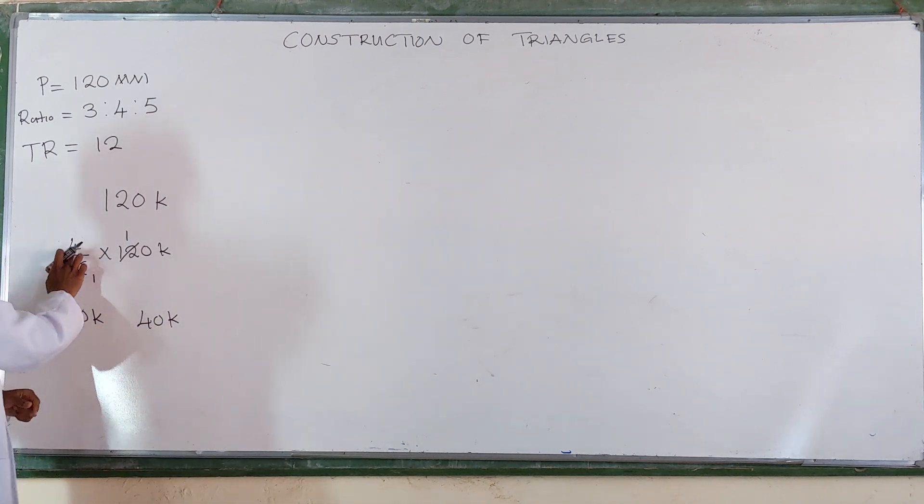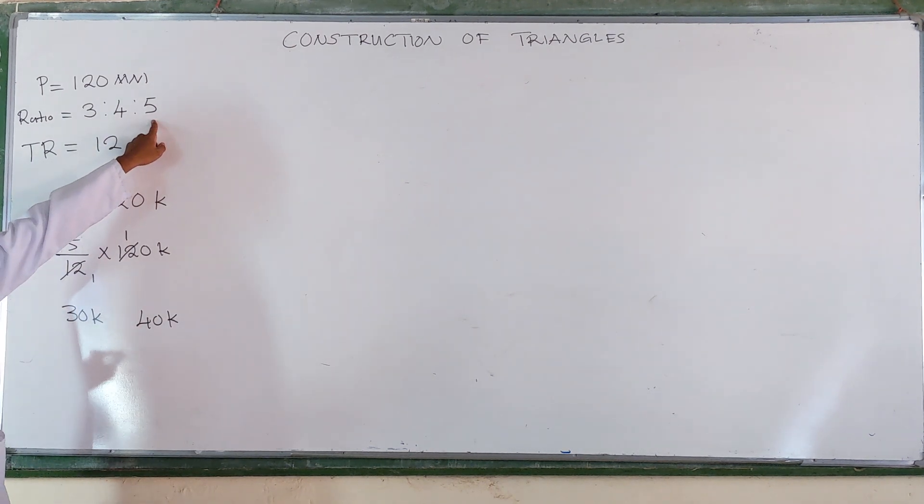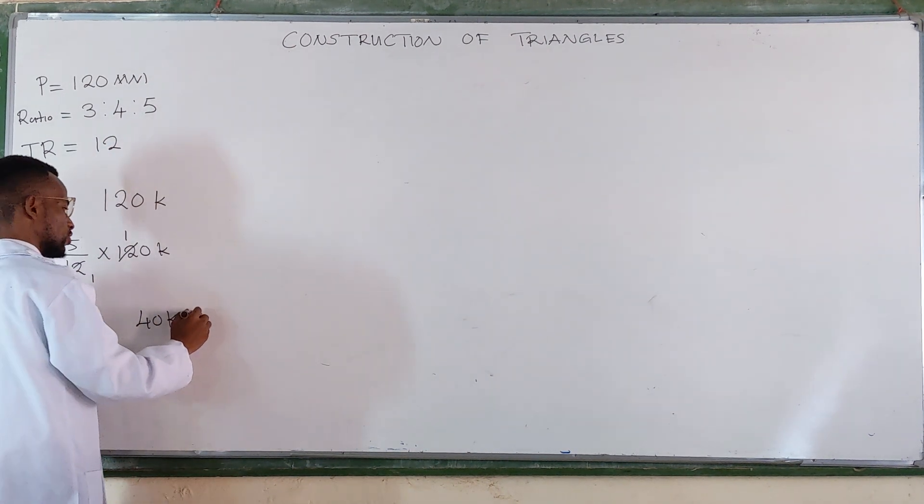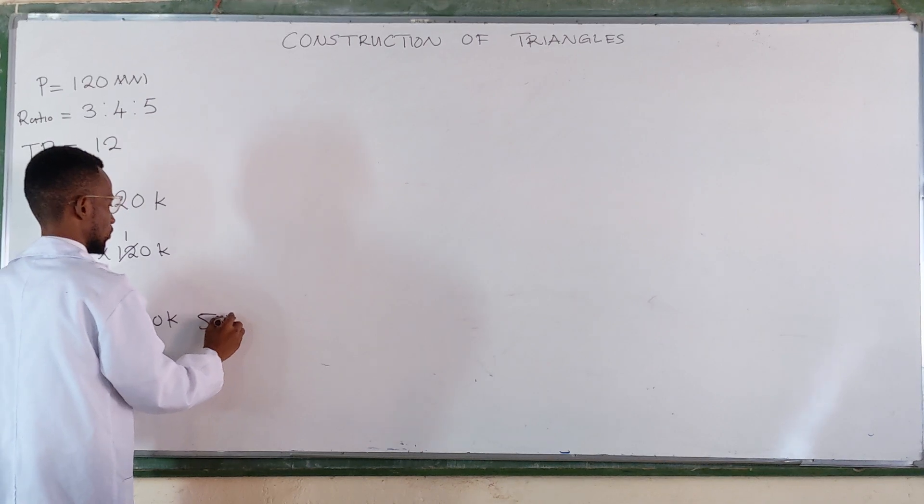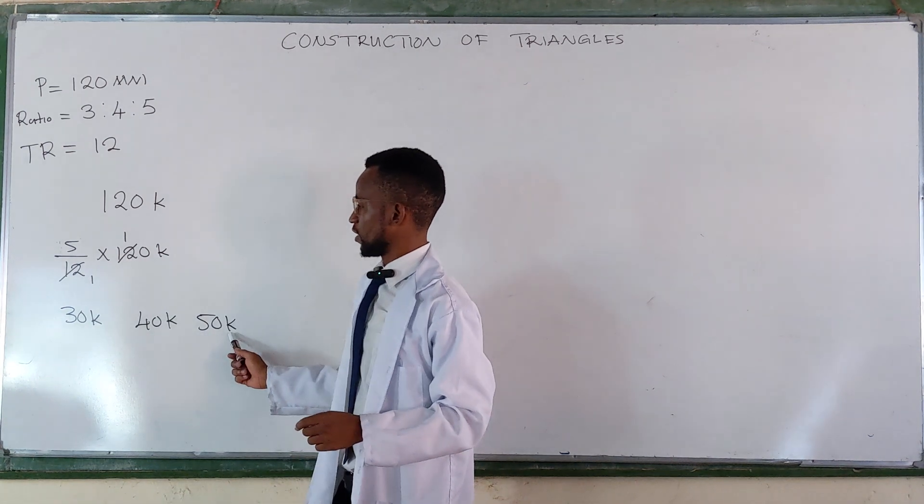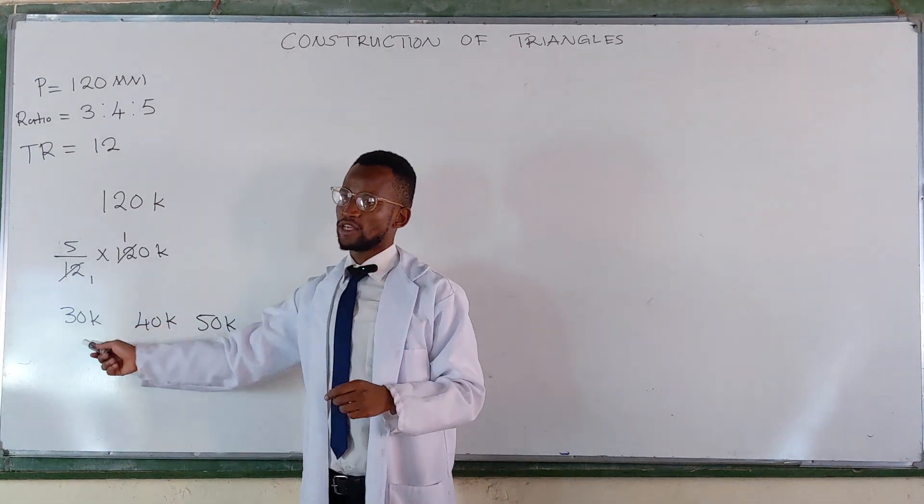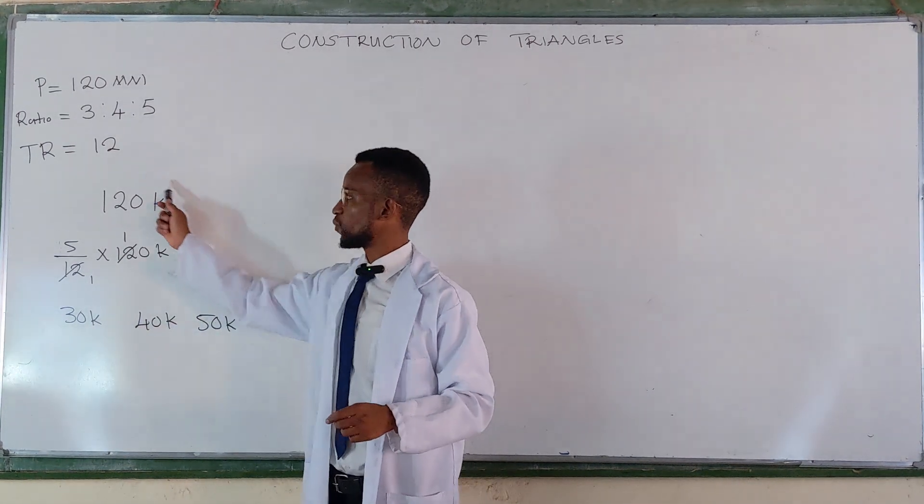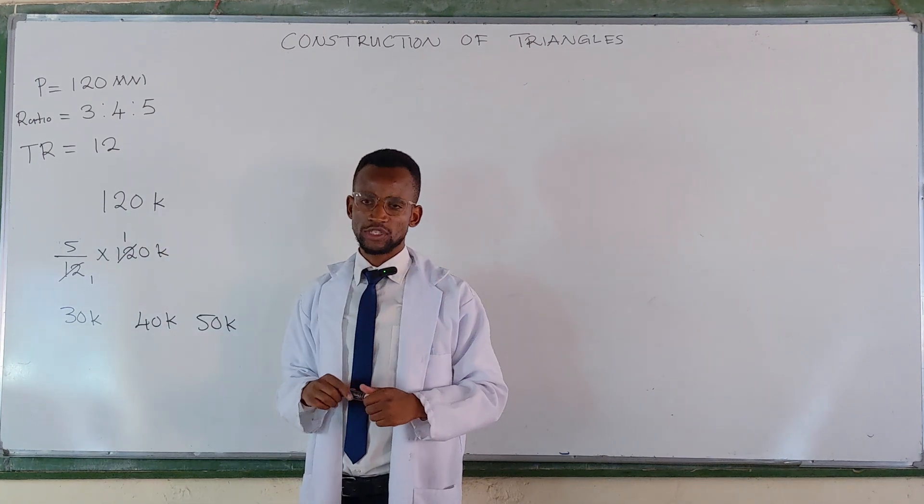For the next one, we replace this with a 5. Then we're going to have 50K. Meaning these will be the divisions. And if you add these, they will take you back to 120K.